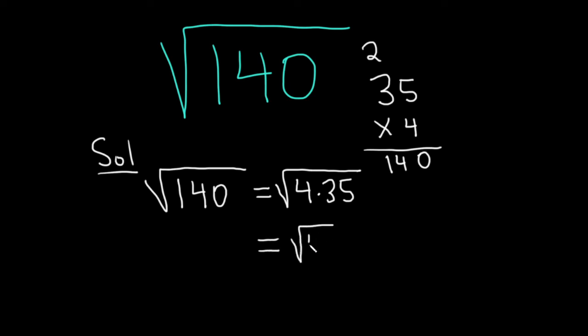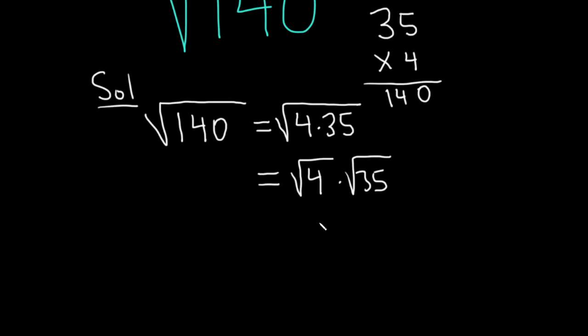The square root of 4 is 2, and then here we just have the square root of 35. And that would be the final answer.